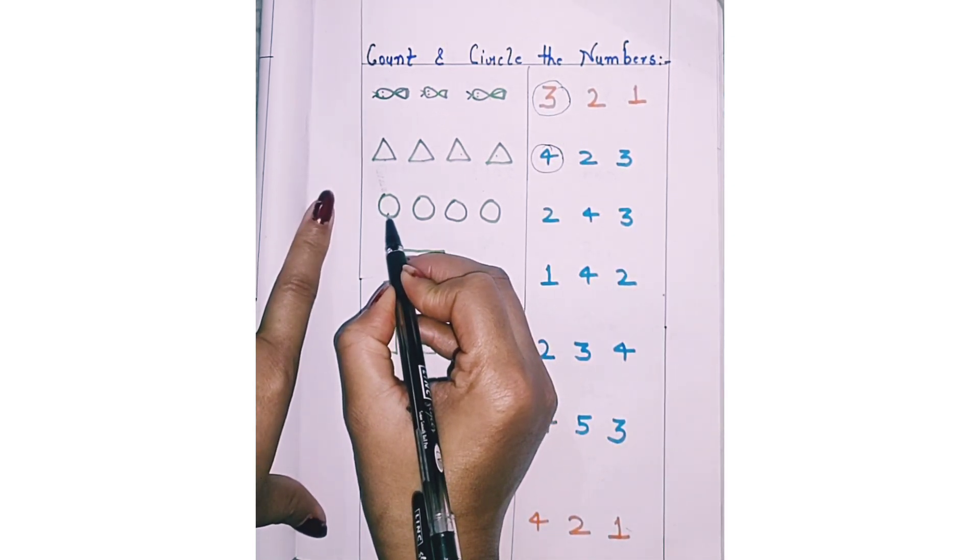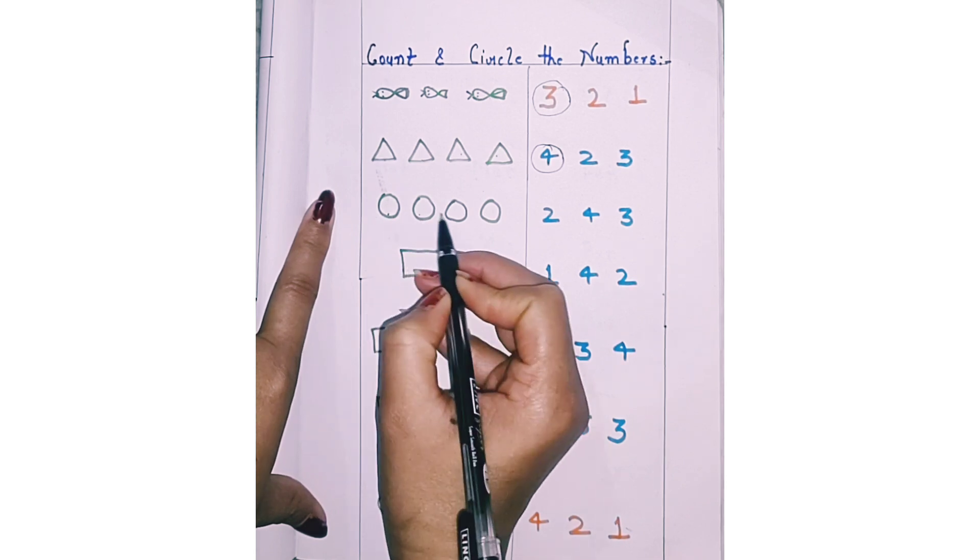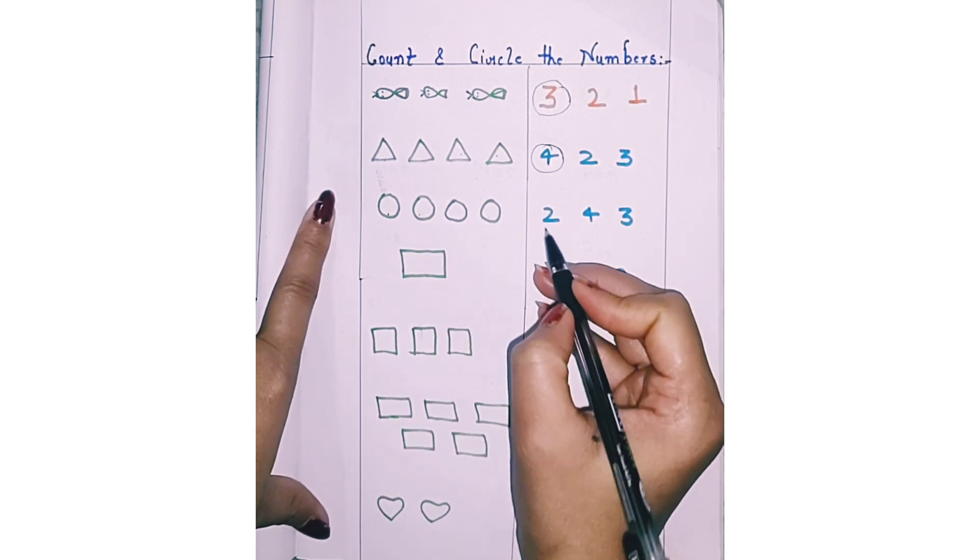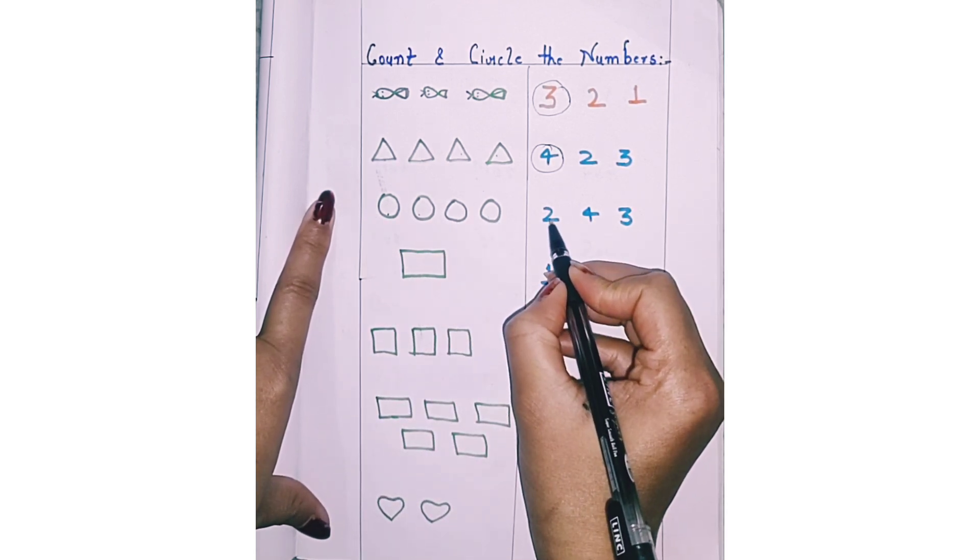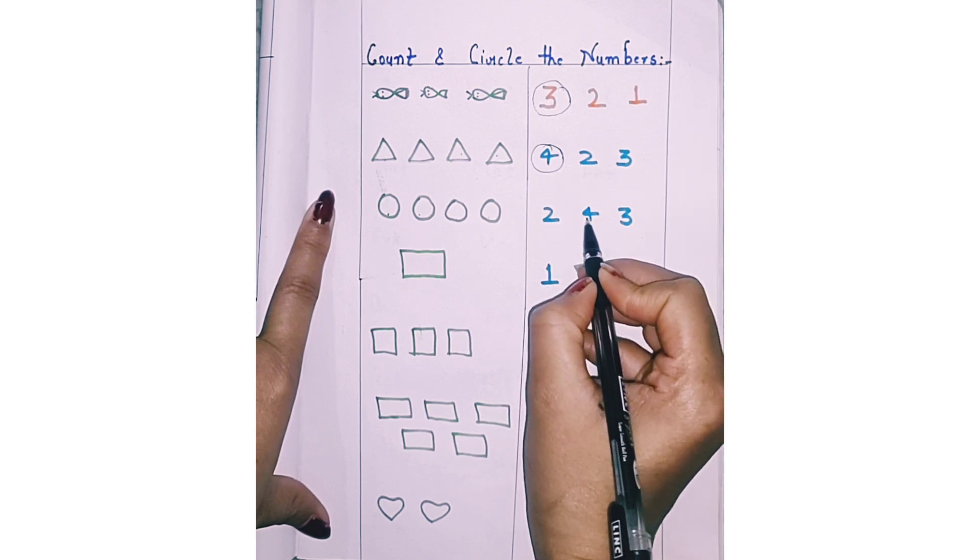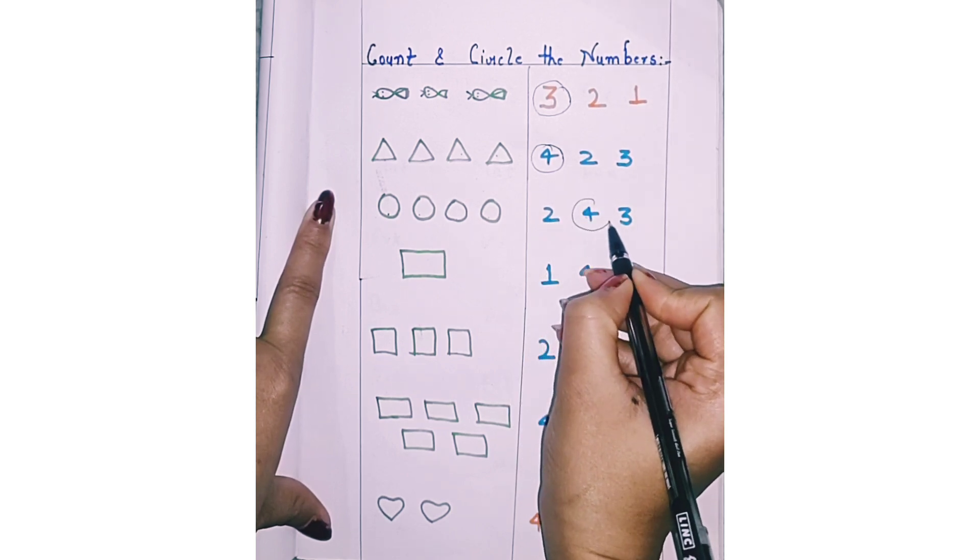Next. How many circles are there? 1, 2, 3, 4. Find 4. Where is 4? 2, 4, 3. Circle 4.